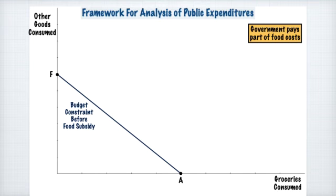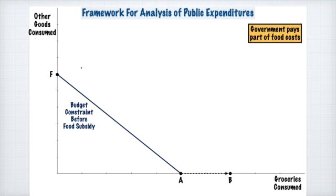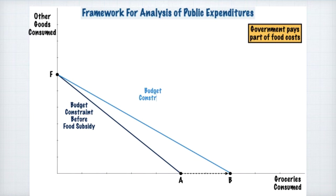So let's take a look at how this type of subsidy program impacts the budget constraint. If the individual spends all of their income on groceries, they can consume 30% more — the government is allowing them to purchase food stamps at 70% of their face value, so they're getting a 30% subsidy. But if an individual purchased all other goods and consumed no groceries, they didn't buy any food stamps and got no subsidy, so point F remains unchanged. You don't get the subsidy unless you purchase the food stamps, and if you spent all your money on all other goods, you have no money left to purchase food stamps from the government.